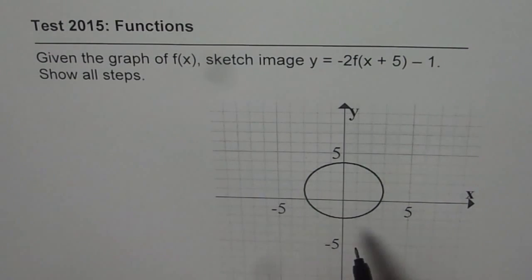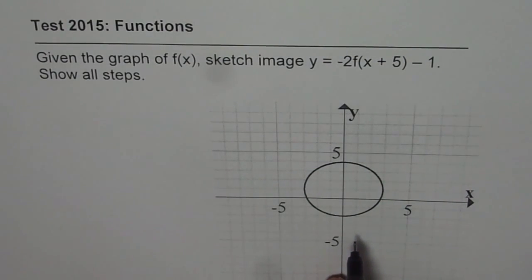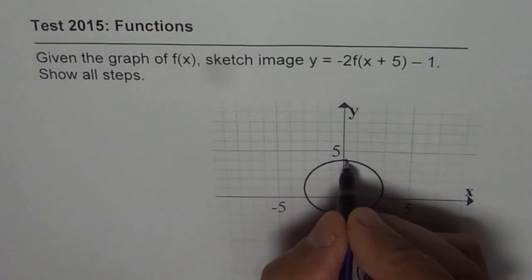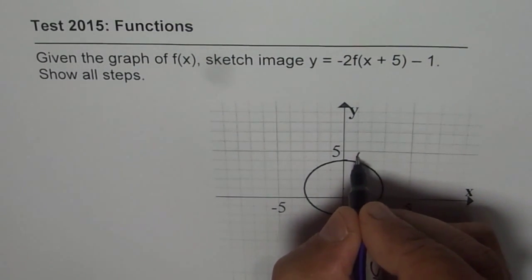Now we have a graph of a circle this time, where the center has been translated one unit up. In any case, to sketch a graph, let us take a few points. So this is a good point to start with. Let's say A.